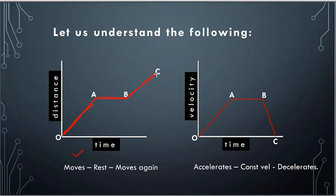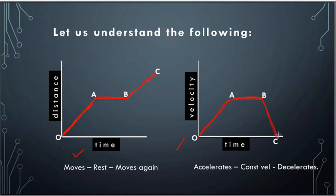In the velocity-time graph, slope means velocity by time, which is acceleration. The first portion shows uniform acceleration — the body is moving faster and faster. Then the horizontal portion shows zero acceleration, meaning uniform velocity. Note the body is not at rest here — it is moving with constant velocity. Then the velocity decreases, showing negative acceleration, also called deceleration or retardation, until the body comes to rest. In a distance-time graph, horizontal means zero speed; in a velocity-time graph, horizontal means zero acceleration.